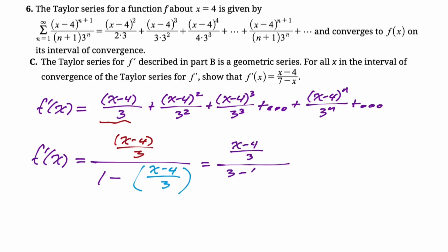x minus 4 over 3 over 3 minus the quantity x minus 4, all over 3. Since they're both over 3, we can just cancel the threes ultimately, but right now we have x minus 4 over 3 over 7 minus x all over 3. So cancel those threes, x minus 4 over 7 minus x, which is what they asked us to show, so I'm just putting a check mark because I think we did it.